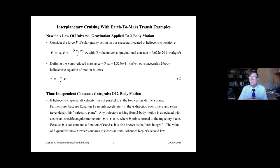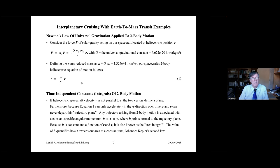That gives us the acceleration to integrate for a precision trajectory, but it only accounts for the sun's acceleration. Near a planet it's a no-man's land, but as we said, planets dominate the acceleration only very close to the planet on the scale of the solar system. Most of the time we're cruising between planets, the planet's acceleration is easy to ignore with a very accurate approximation. The neat thing about this equation is that there are some wonderful time-independent constants, which we call integrals of the motion.